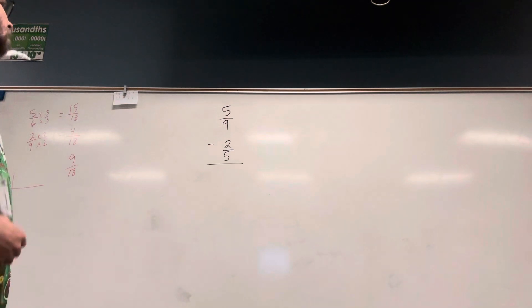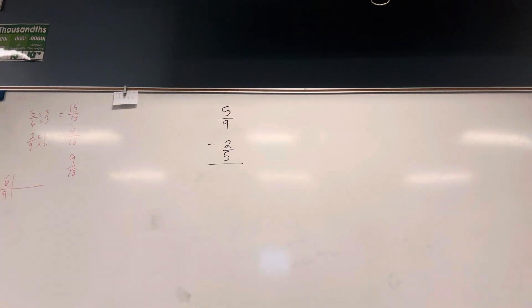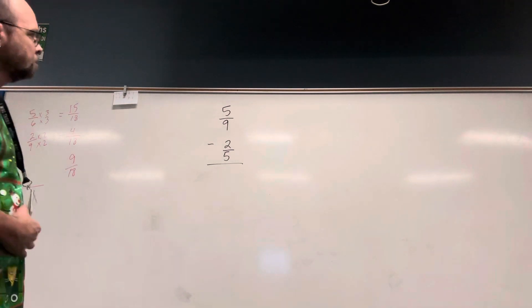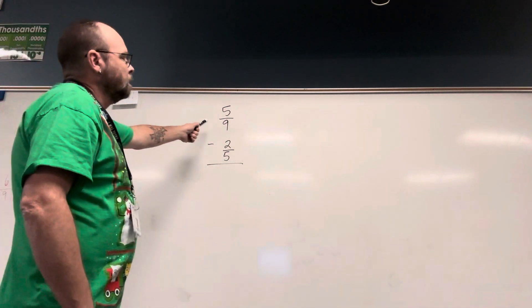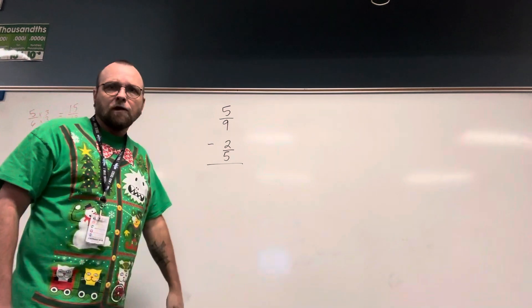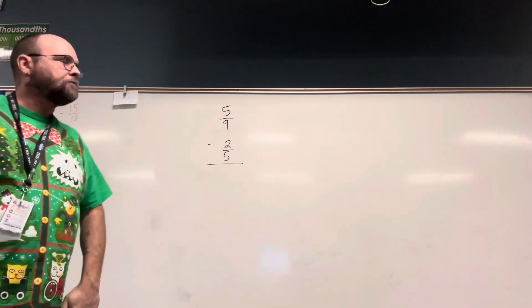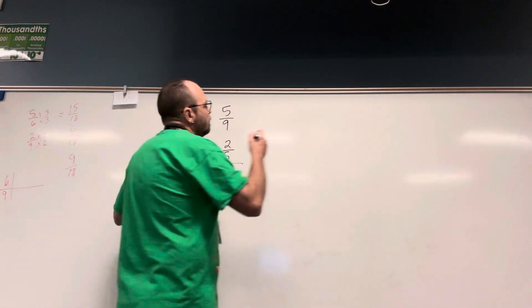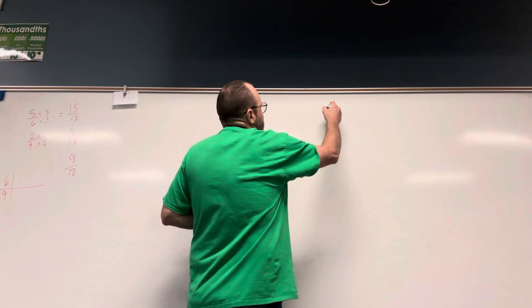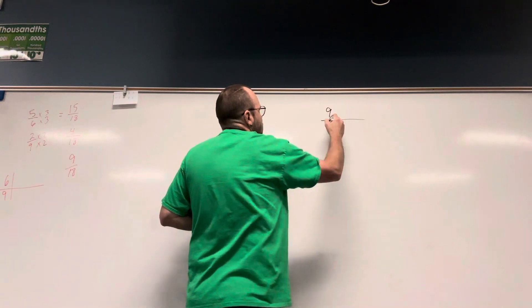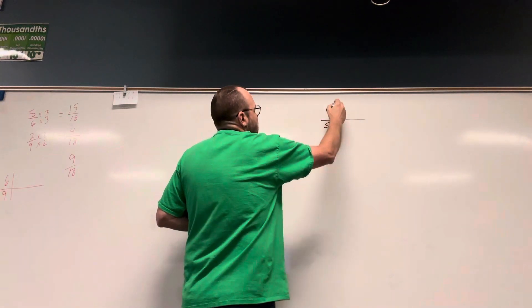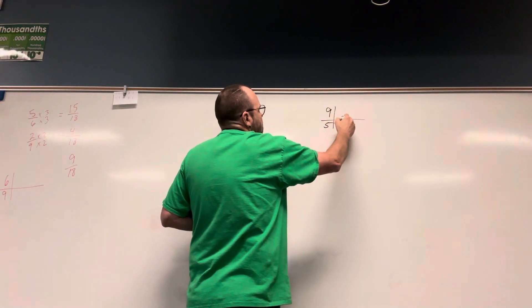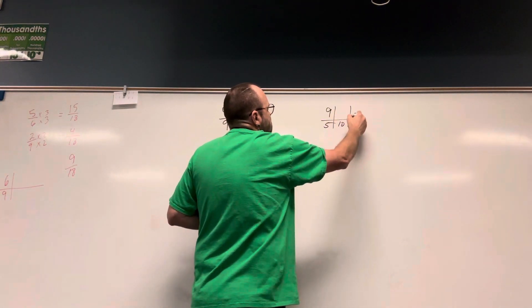The next problem we have is five ninths subtract two fifths. We cannot subtract them the way they're written — we have to have a common denominator. So we'll take our two denominators, which are nine and five, and we'll list the multiples.